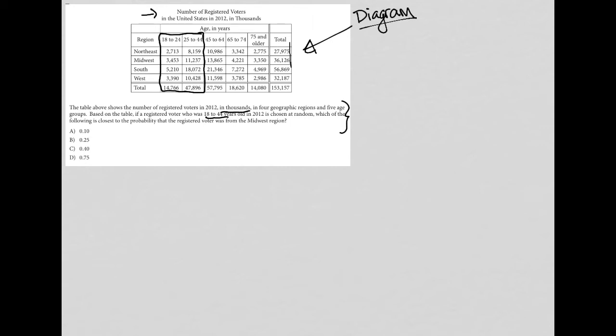So if a registered voter who was 18 to 44 years old in 2012 is chosen at random, which of the following is closest to the probability that the registered voter was from the Midwest region? So whenever I see the word probability on the SAT, I'm going to think fraction. I want you to think fraction where the numerator is what I want and the denominator is the total.